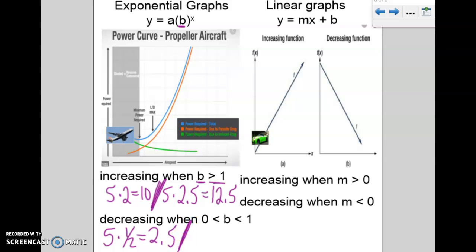And if I thought about something else, let's say if I did 5 times 1 fifth of a number. So 1 fifth is greater than 0, just slightly, but smaller than 1, and that would just give us 1. So if you start at 5 and multiply by half and get 2.5, start at 5 and multiply by 1.5, you will just get 1. So decreasing when that B value is between 0 and 1.